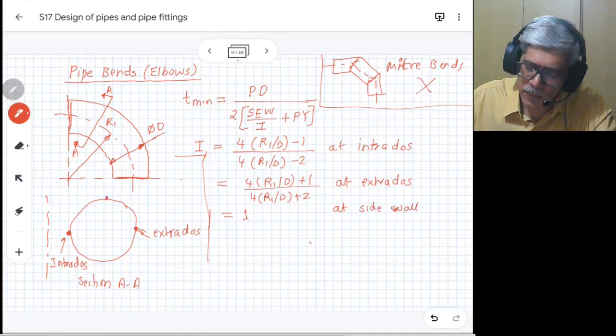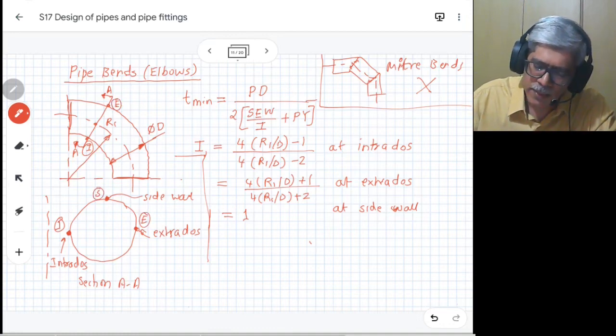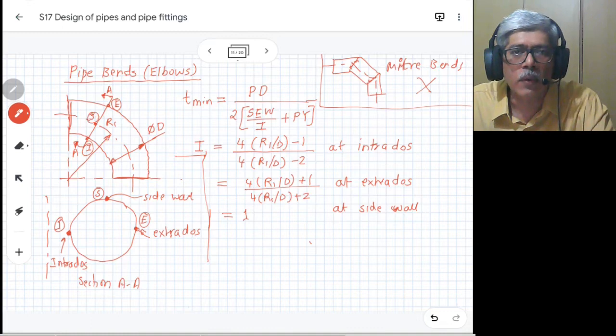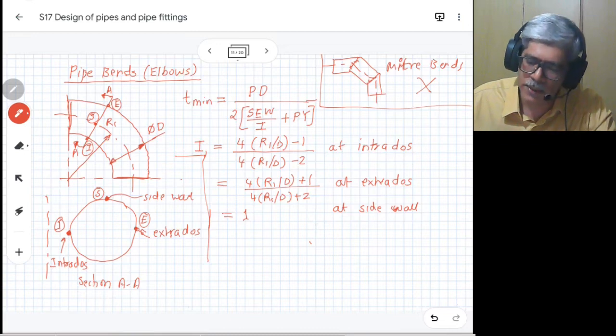And this factor is 1 at side walls, or in between intrados and extrados. So this is the side wall - the intrados I will lie here, extrados E will lie here, and a side point S will lie at this particular location. At all three points the I value is different. Generally, side wall you don't do the calculation; it is done at intrados and extrados where, because of forming operation, the thickness may change.